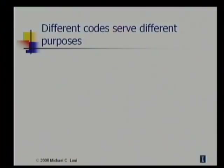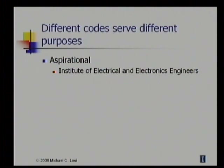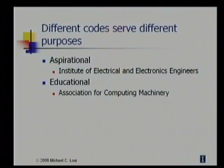Now, you might think, why do we need different kinds of codes of ethics? Well, different codes of ethics serve different purposes. The IEEE, or Institute of Electrical and Electronics Engineers, has an aspirational code that talks about the highest ideals of the profession without giving a lot of details. The Association for Computing Machinery has a code that is explicitly educational. For each rule in the ACM code, there is a paragraph of interpretation and explanation.